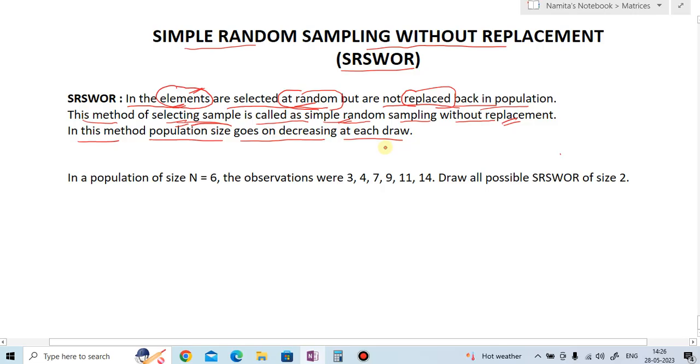In this method, the population size is going to be decreased at each draw. So let us understand simple random sampling without replacement with one example. In a population of size N equals 6, the observations are 3, 4, 7, 9, 11, 14.